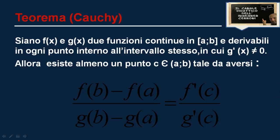Andiamo a leggere l'enunciato e poi subito dopo lo dimostriamo. Enunciamo il teorema di Cauchy. Si hanno f(x) e g(x) due funzioni continue nell'intervallo chiuso e limitato [a,b] e derivabili in ogni punto interno all'intervallo stesso, ovvero (a,b) aperto e limitato, dove tra l'altro g'(x) sia diversa da zero.